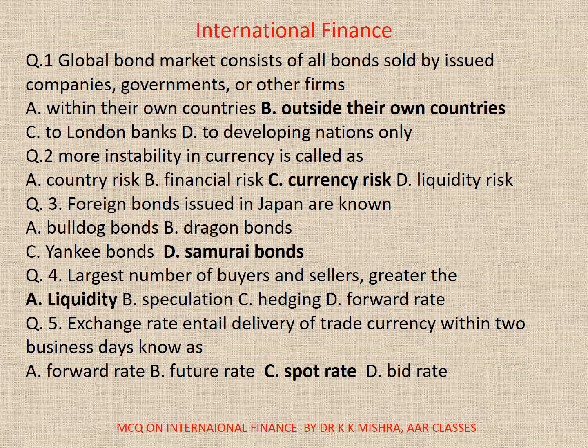Question number three. Foreign bonds issued in Japan are known as: A. Bulldog bonds. B. Dragon bonds. C. Lonky bonds. D. Samurai bonds. Correct option is D. Samurai bonds.